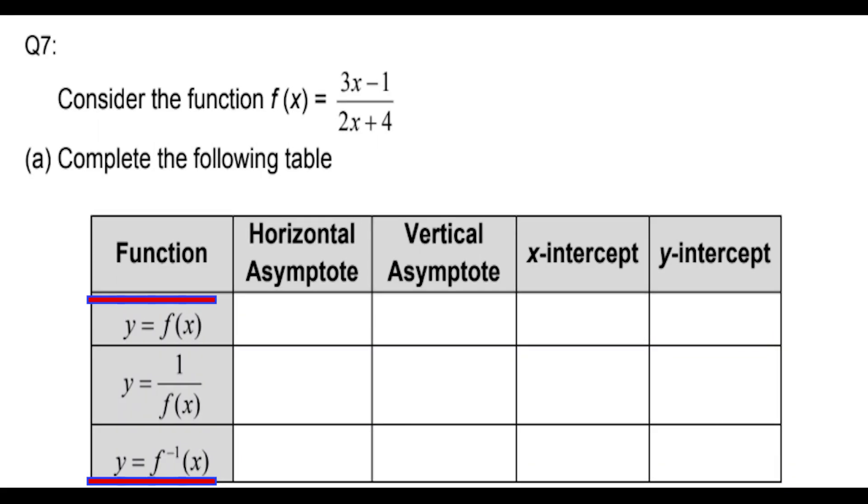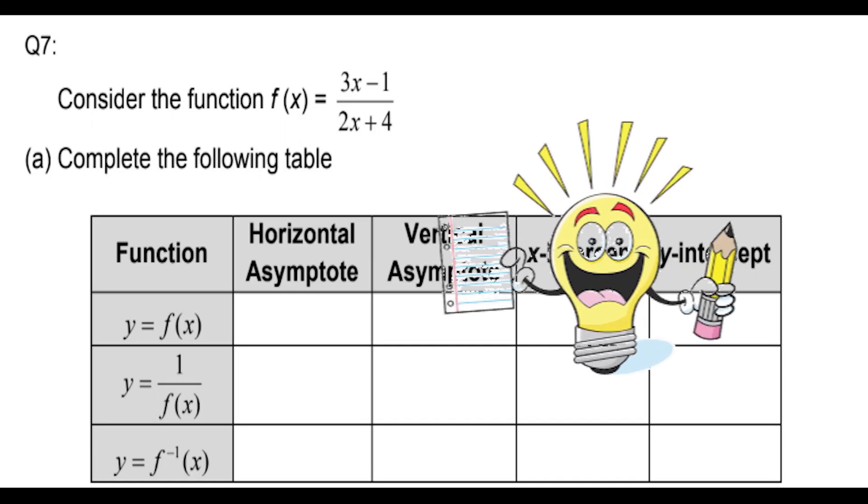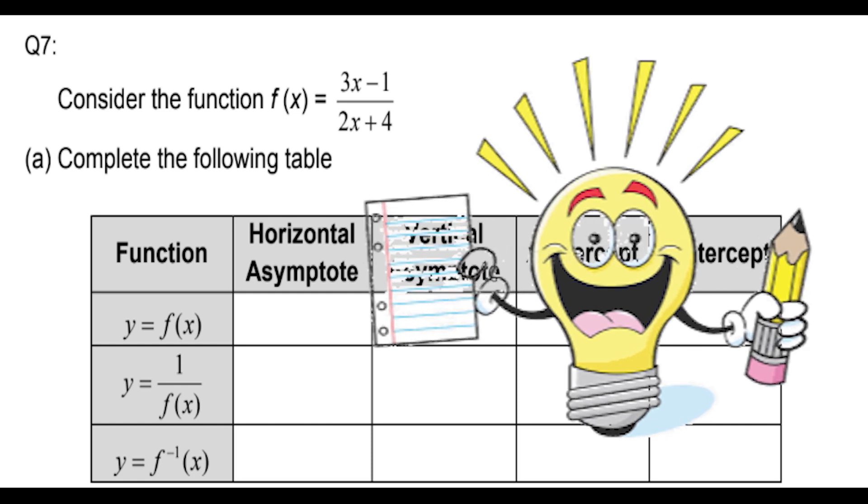Initially we were asked to find the vertical and horizontal asymptote for the function f(x), and we also need to find these two for the inverse function of f(x), which is (-4x - 1) / (2x - 3).